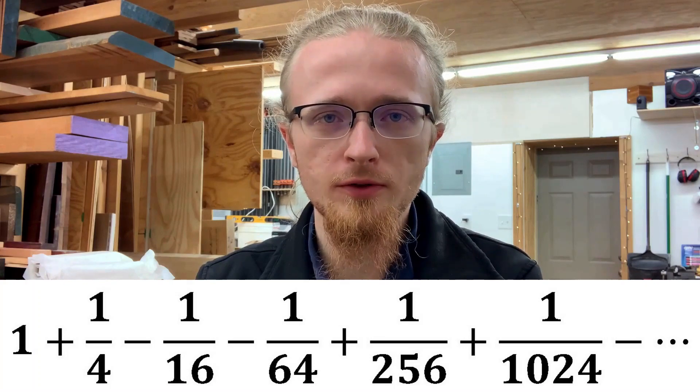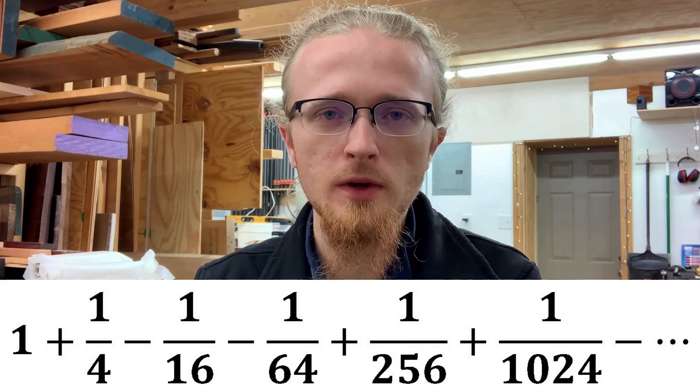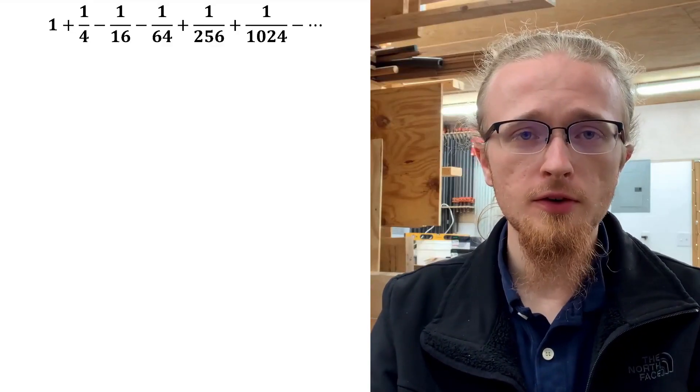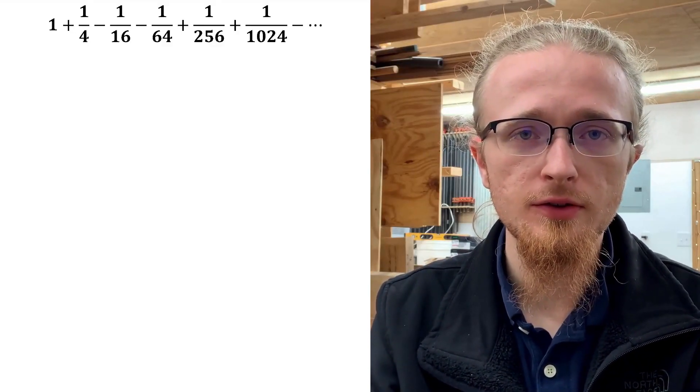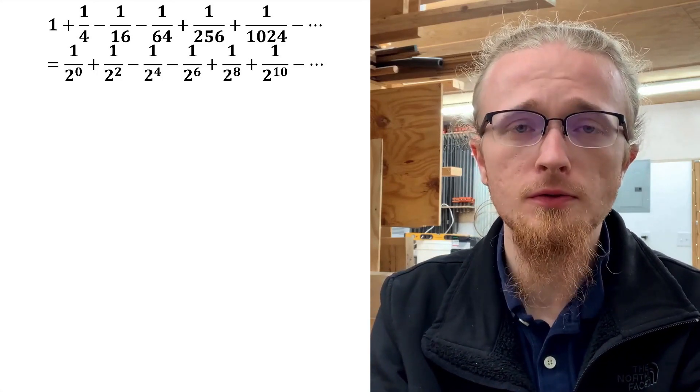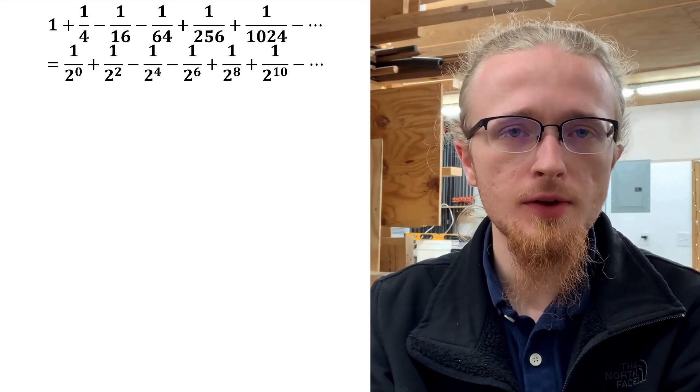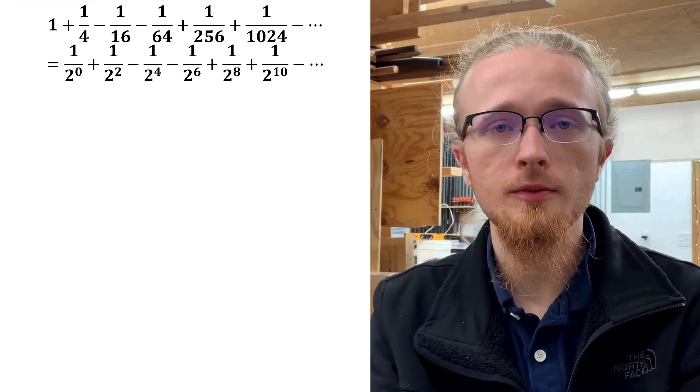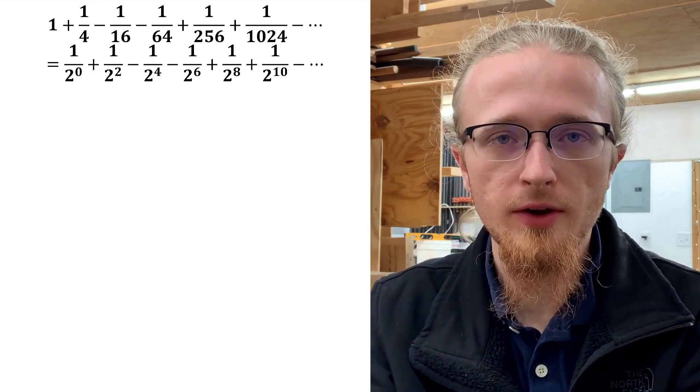It turns out that once we figure out how to handle that, we actually have a pretty straight shot through the whole series. The first step to handling this series is to rewrite all of the denominators explicitly as powers of 2. What we notice is that all of the denominators are just the even powers of 2. This is the first important realization that will help us sum this series.